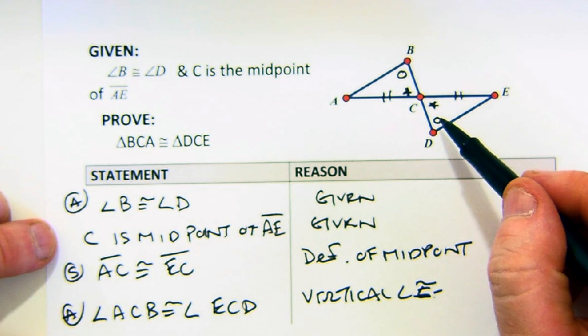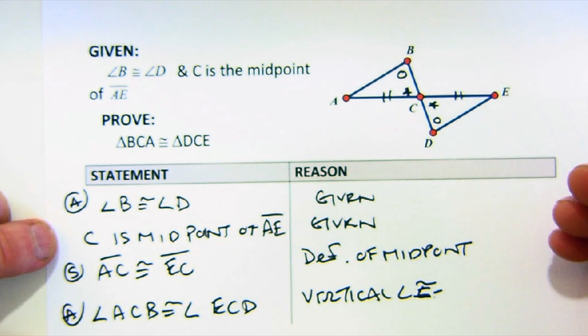That gave me another angle. Let's check the order. It comes in the order of angle, angle, and then a side. And so I'm ready to say triangle BCA is congruent to DCE by angle, angle, side.